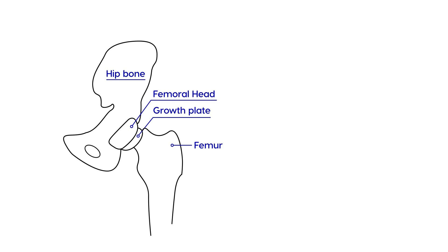What Slipped Capital Femoral Epiphysis is is the movement of the femoral neck upward and forward — so you're going upward in this direction and then forward. You can look at it as coming towards you on the page or on the screen, so it's basically a displacement.